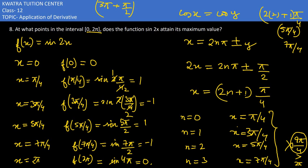The maximum value of 1 occurs at x = π/4 and x = 5π/4. These are the two points in [0, 2π] where the function sin(2x) attains its maximum value.